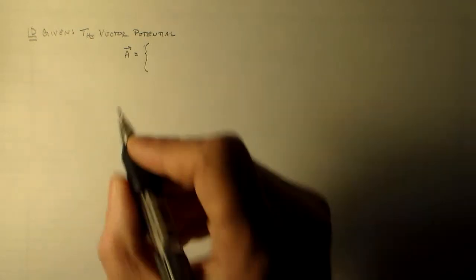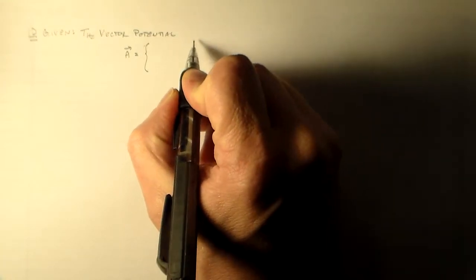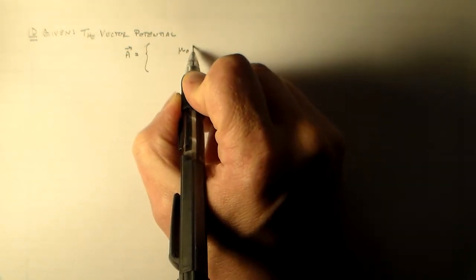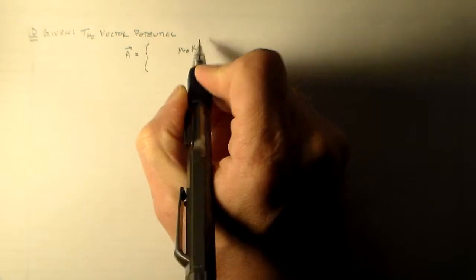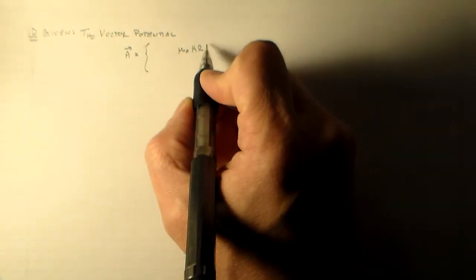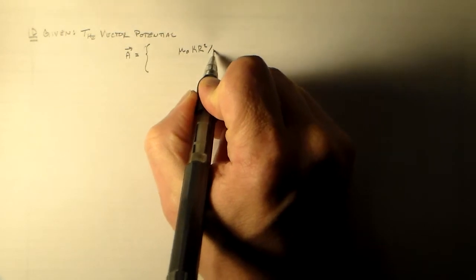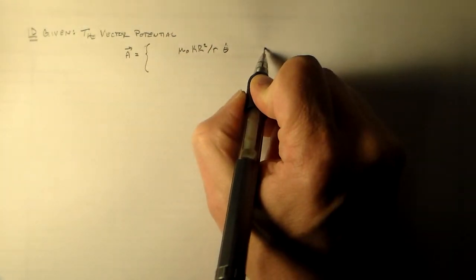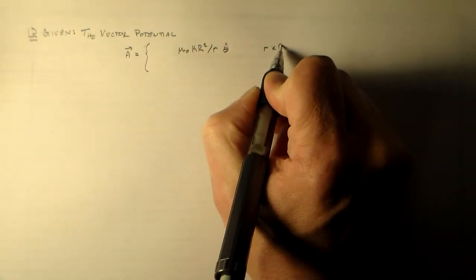And I also want to look at this with respect to the previous problem that I did. In the previous problem, I found the vector potential from a particular current distribution. In this case, I want to go the other way. So we're going to have a piecewise function for our vector potential.